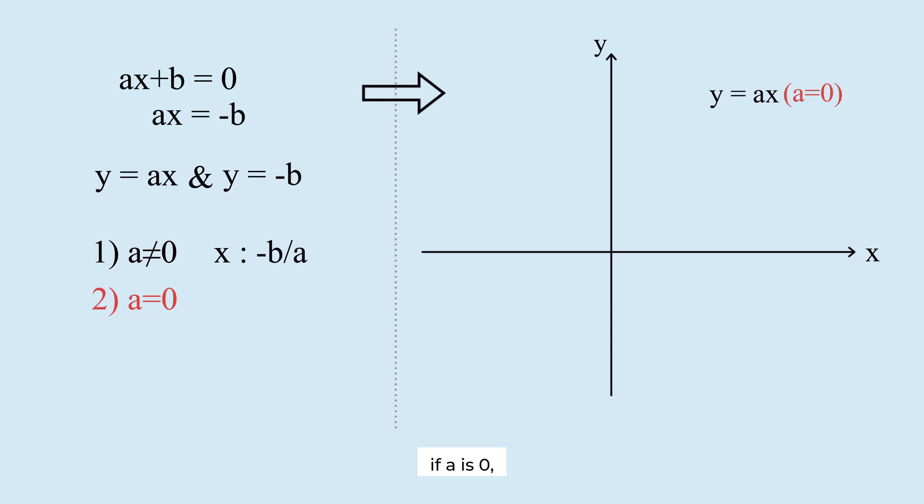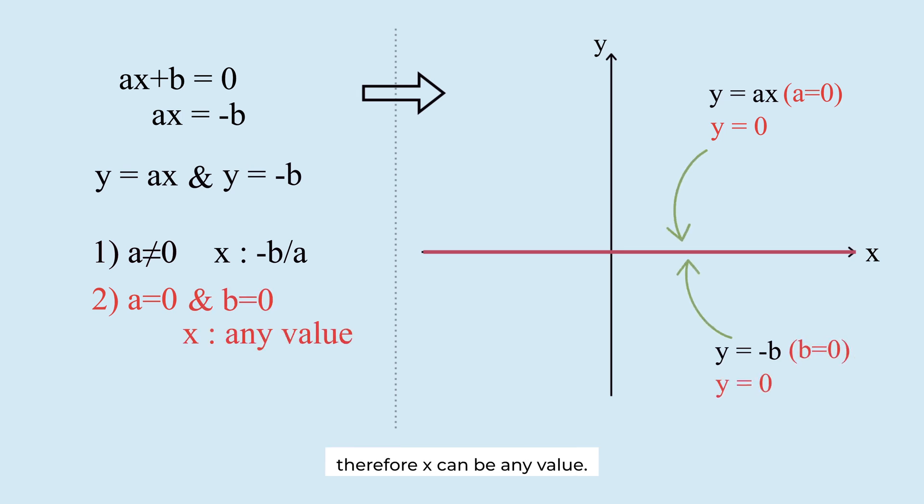If a is 0, y equals ax becomes y equals 0. The graph is the x-axis. If b is also 0, the two graphs overlap. Therefore, x can be any value.